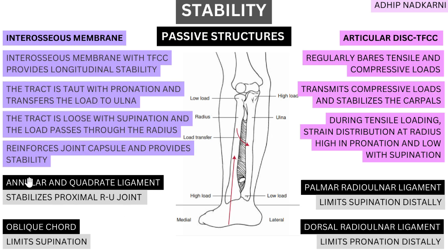Starting with our ligaments, proximally we have the annular ligament and quadrate ligament, which stabilize the proximal radio-ulnar joint, and also the oblique cord, which limits supination. You can check out my previous video linked here for more depth on these. Distally, we have the palmar and dorsal radio-ulnar ligaments — the palmar limits supination and the dorsal limits pronation.